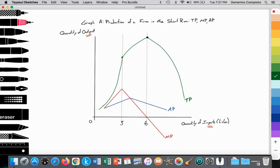So I have the total product function increasing at an increasing rate. Then it's increasing but slowing down, decreasing rate, and then it decreases.